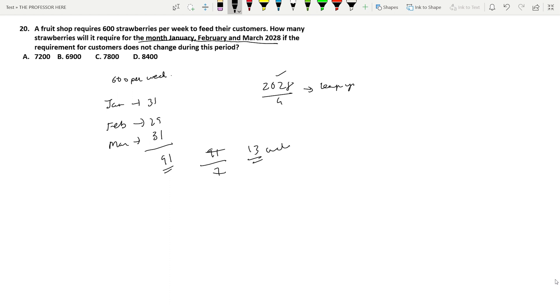You have 600 strawberries per week, so for 13 weeks it is 600 × 13. So now we have solved most of the questions that could come from number system. I hope you understood each one of them. If not, see it again and make sure you understand before moving on to the next topic. Stay safe and see you again.